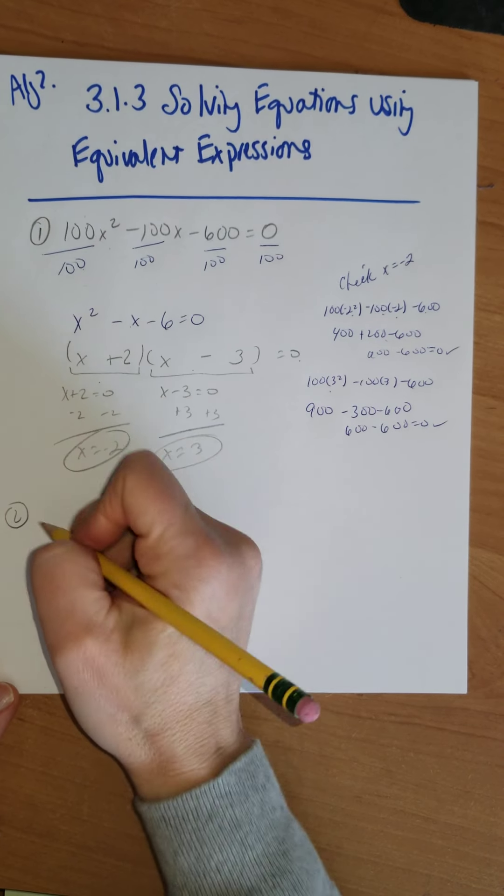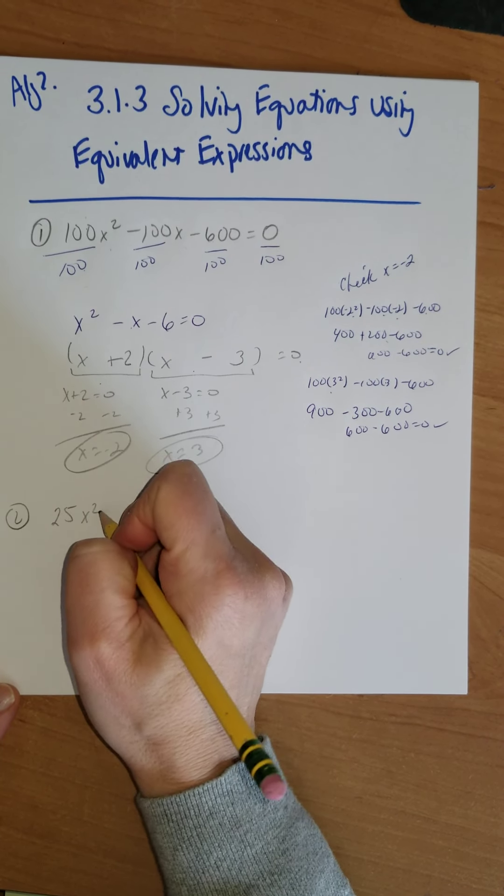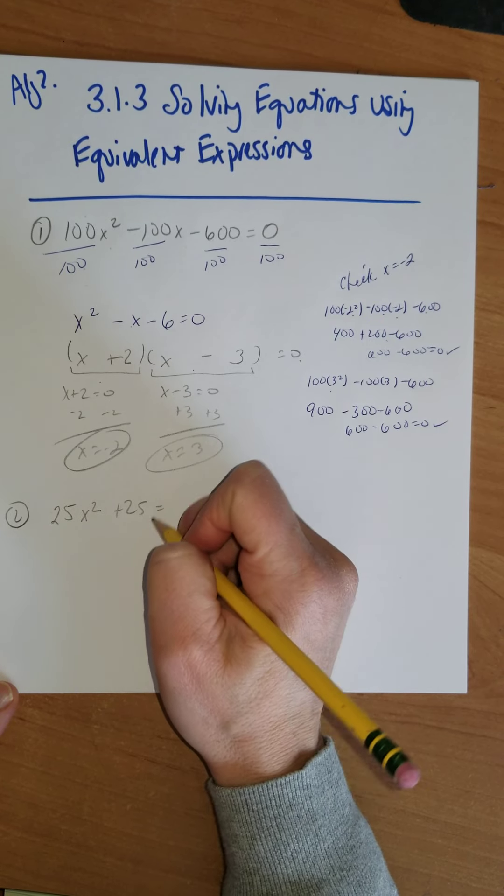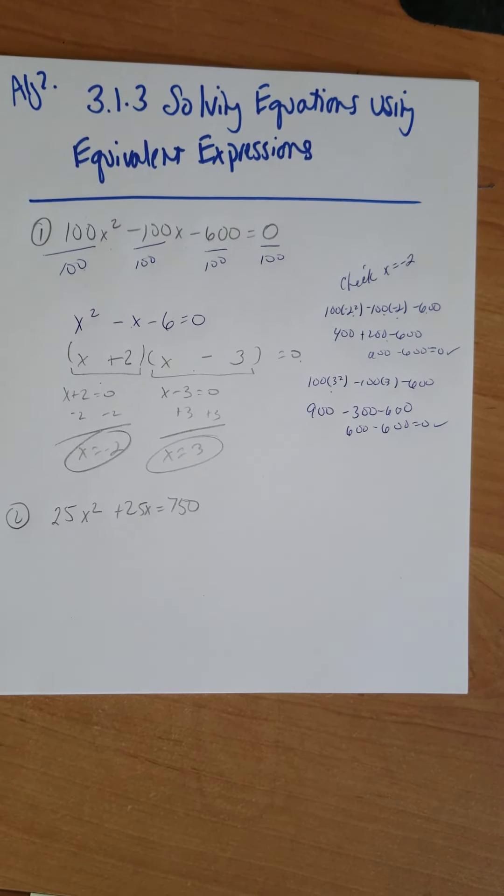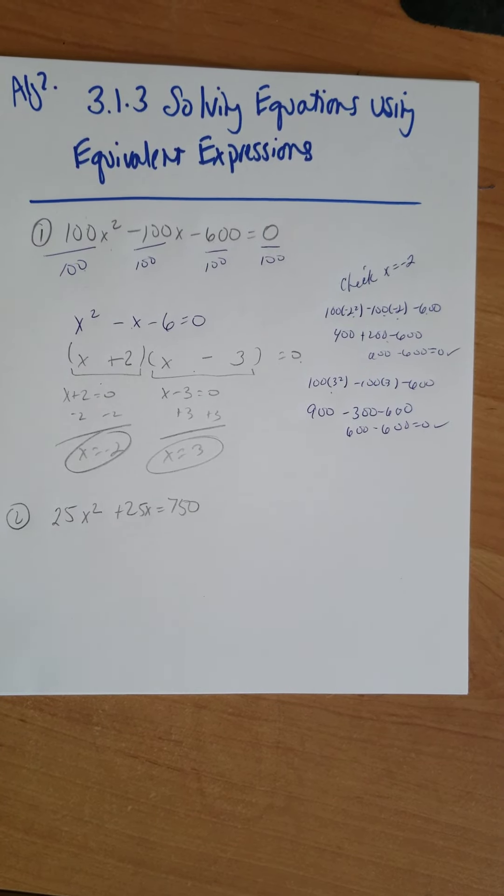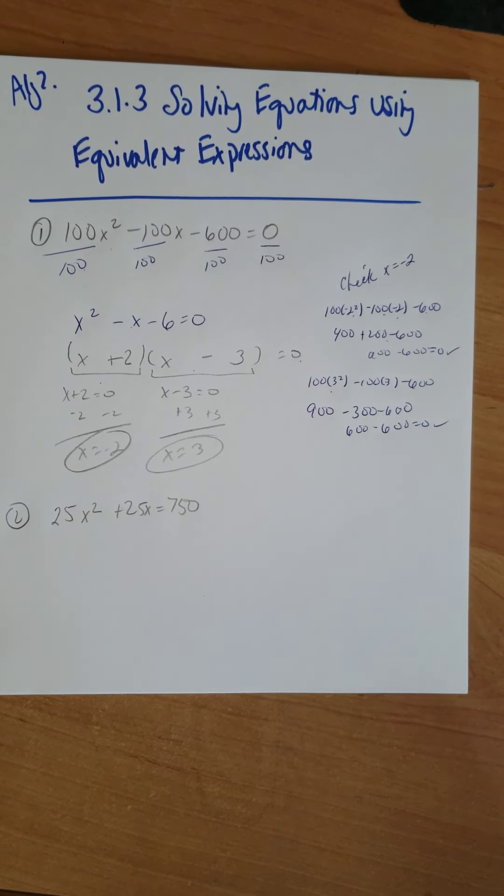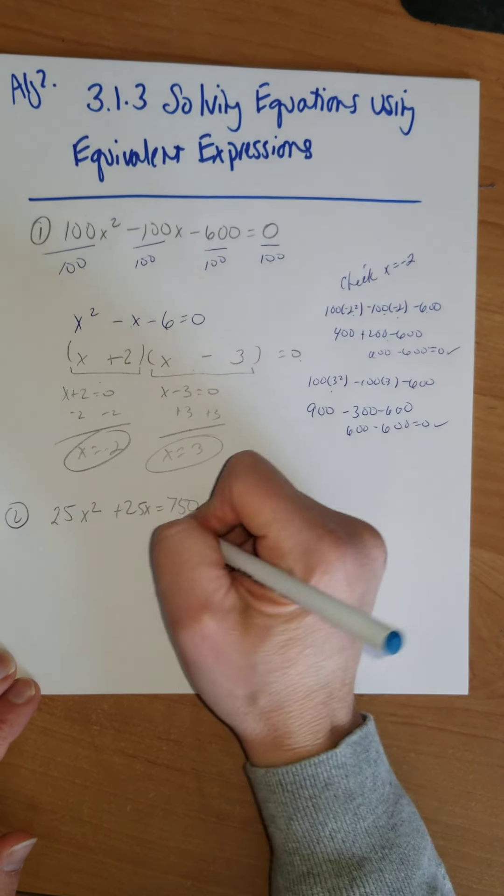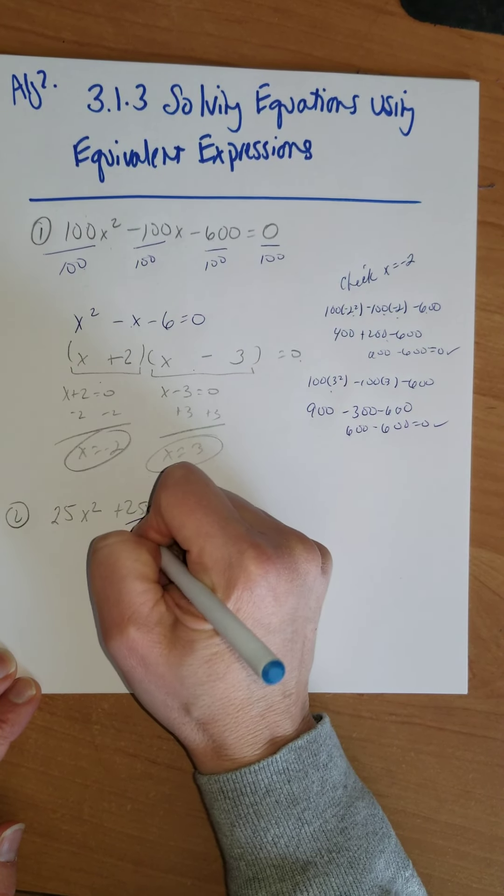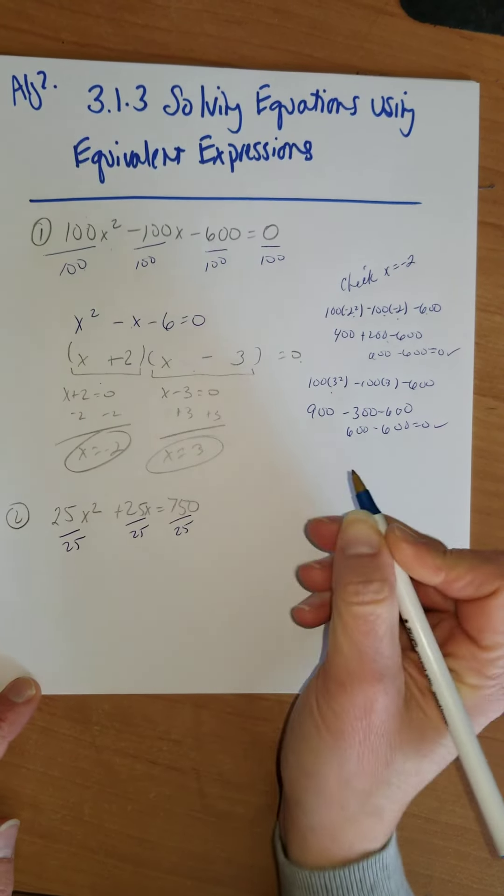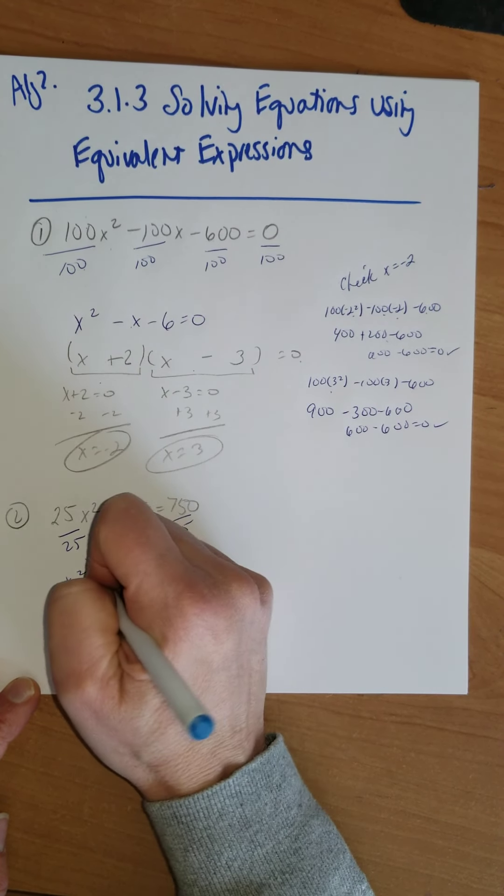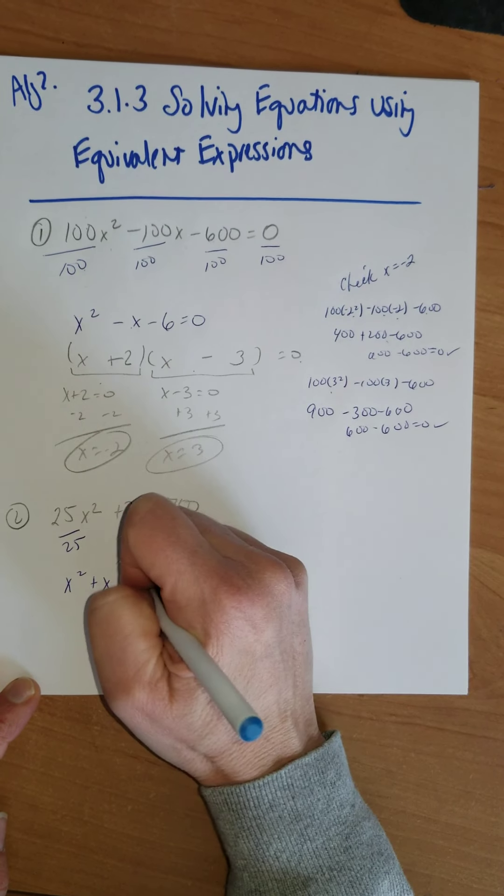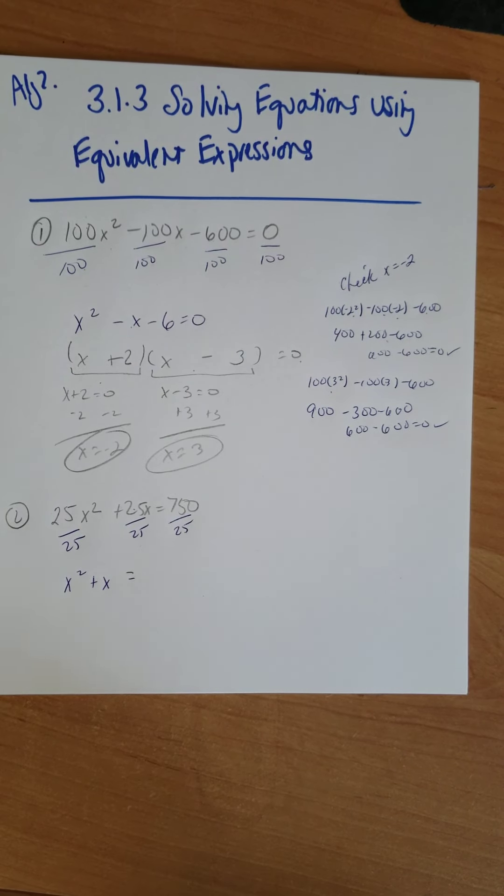My second one, what if I have 25x² + 25x equals 750. So I want to make that into a simpler, easier problem. Well, I'm looking at all of these, and it looks like I could divide out 25 from all these terms. 25x² divided by 25 is x². 25x divided by 25 is plus x, and that's going to equal 750 divided by 25, which is 30.